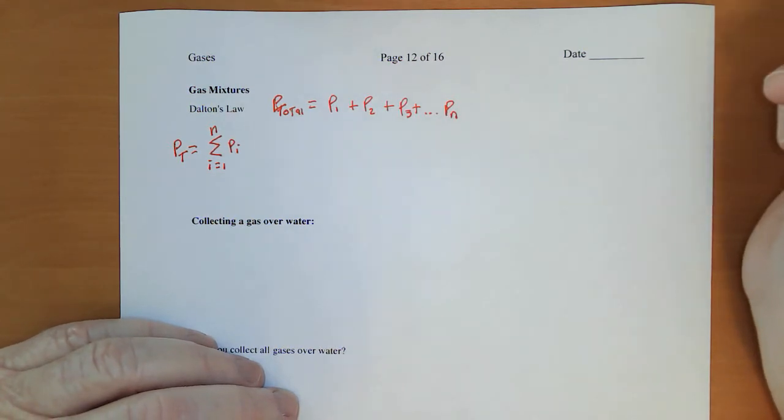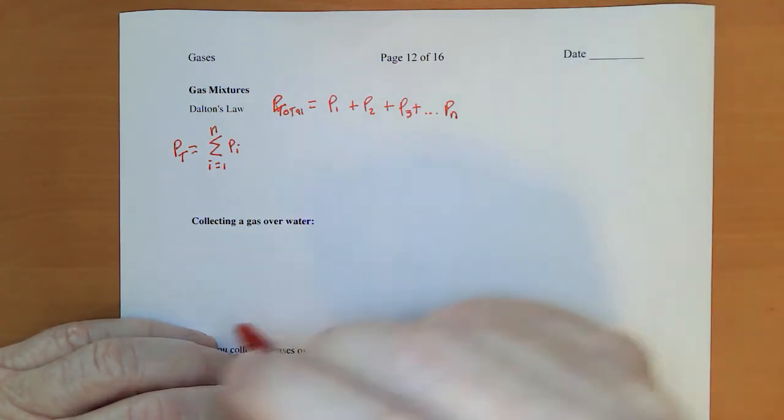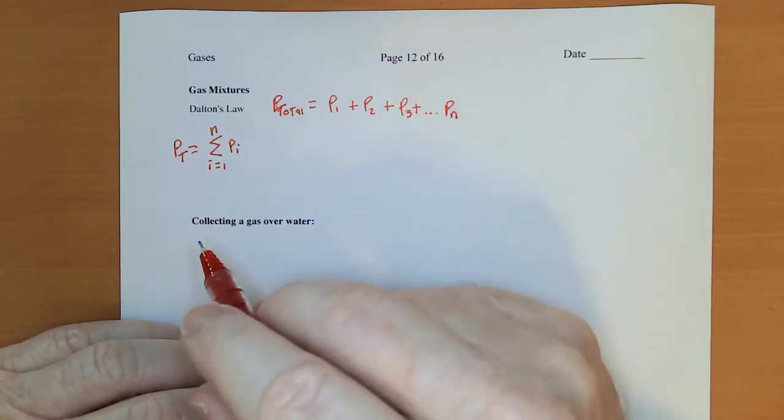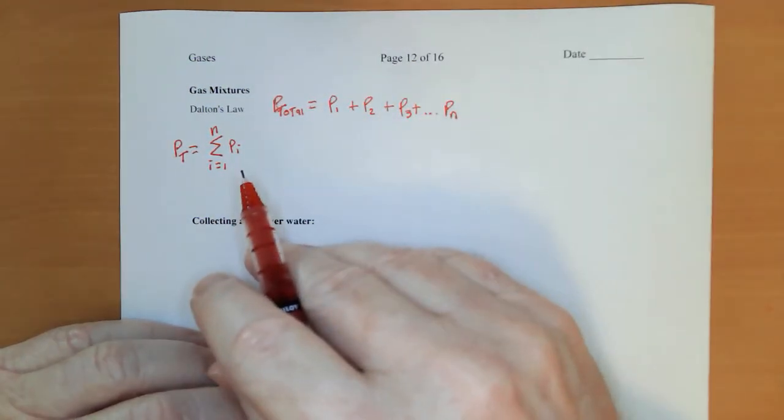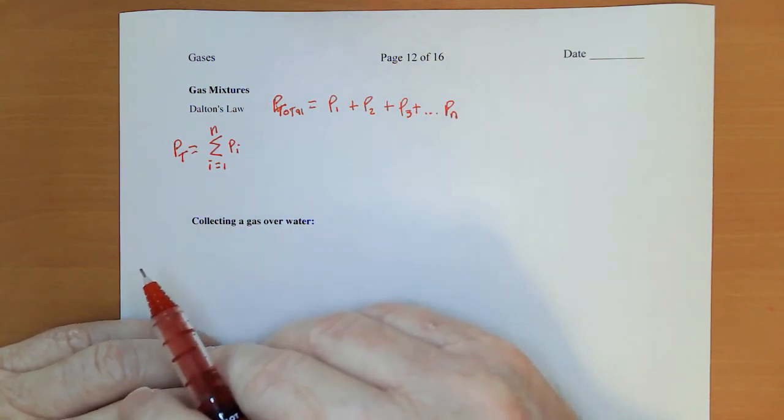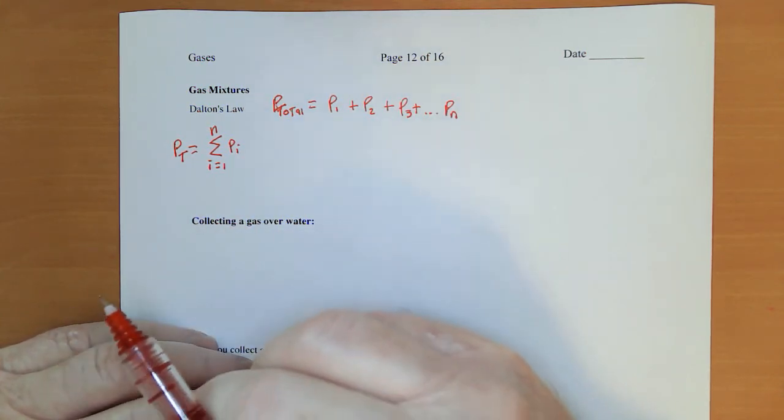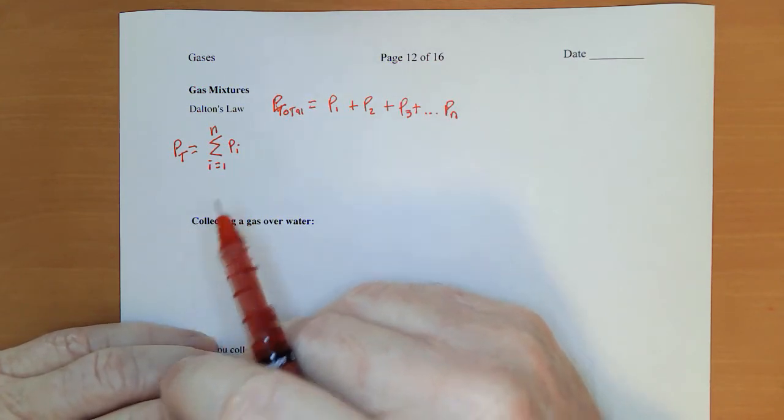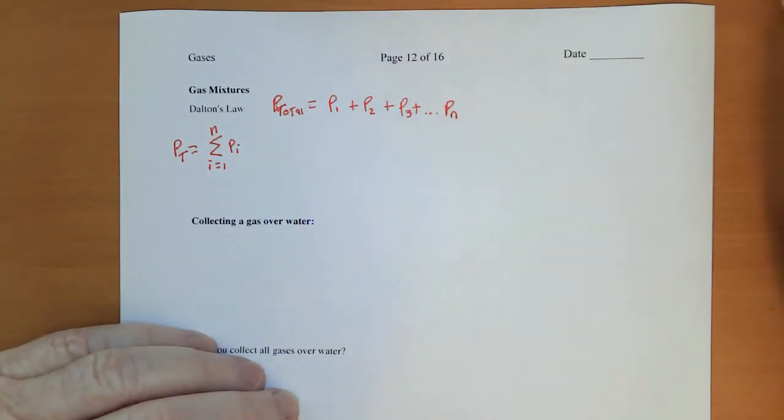Now, the pressure that you feel on your body right now, called atmospheric pressure, is not the result of just the nitrogen or just the oxygen. It's the result of all of those gases exerting pressure on you: collisions of nitrogens and oxygens and argons and CO2s and all that.